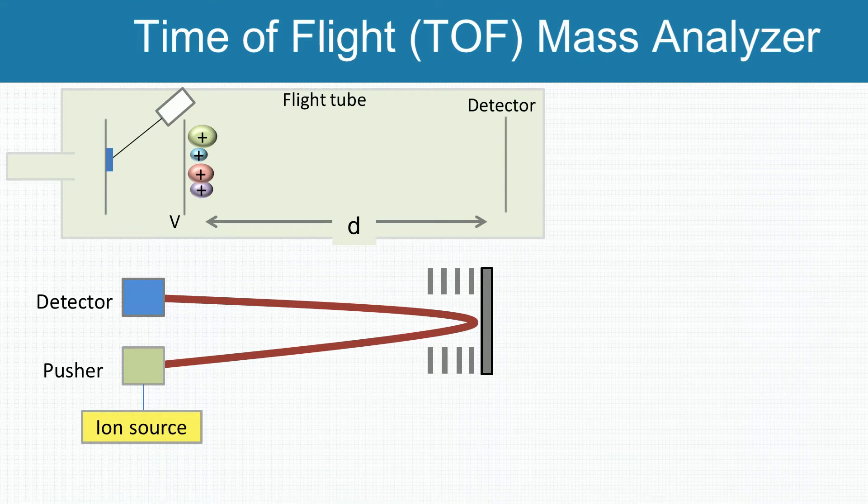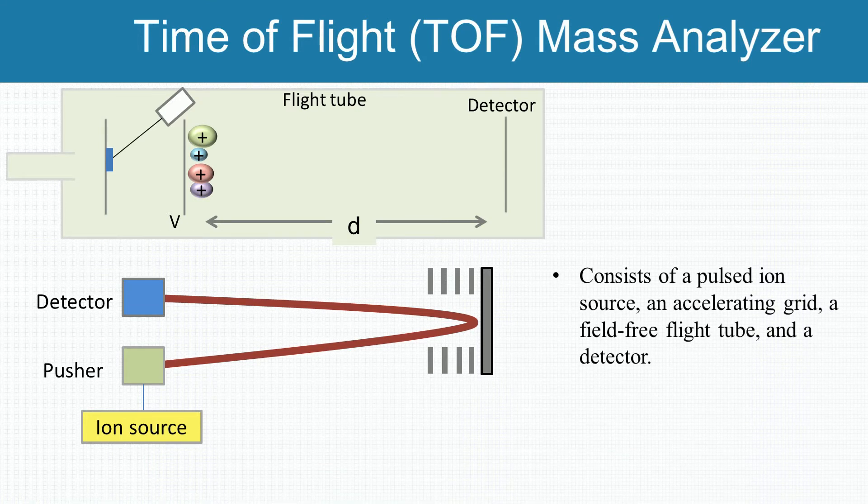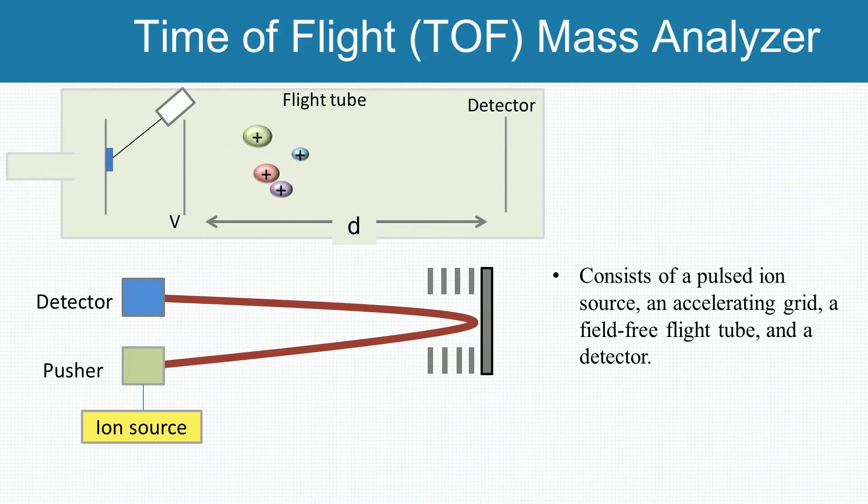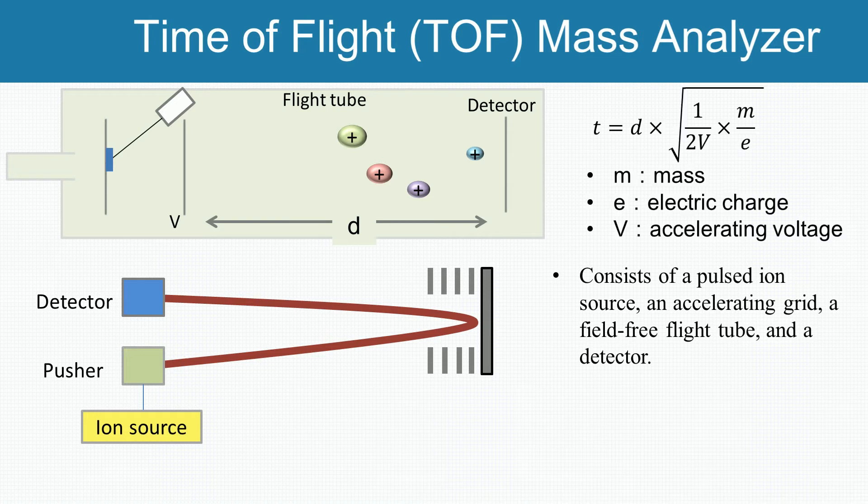A time-of-flight analyzer consists of a pulsed ion source, an accelerating grid, a field-free flight tube, and a detector. The flight time needed by the ions with a particular mass-to-charge, accelerated by a potential voltage, to reach the detector placed at a distance, can be calculated.